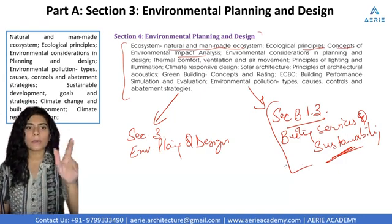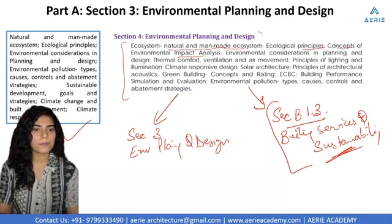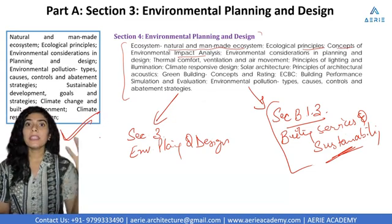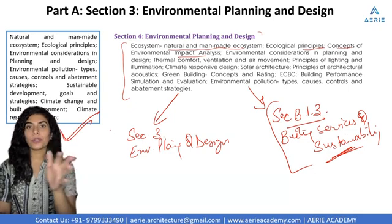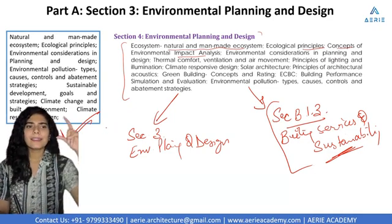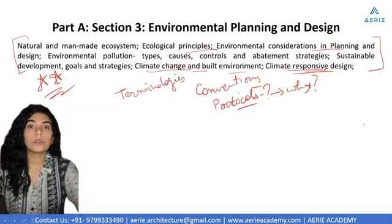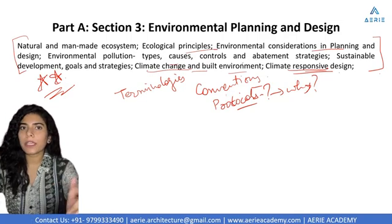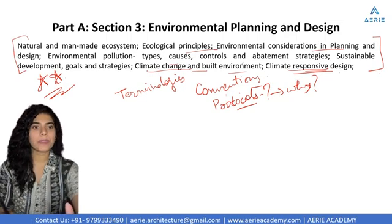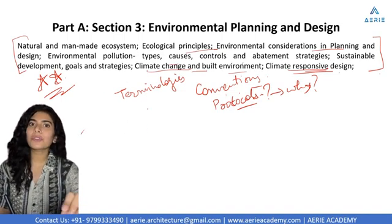Currently in Section 3, Environmental Planning and Design, where all the syllabus is listed, there is nothing to mark as more or less important — everything is important. This complete section is important and you need to cover it. To give you a summary: in environmental planning and design, you need to cover all the topics listed. These topics are easy, this section is easy and very scoring.